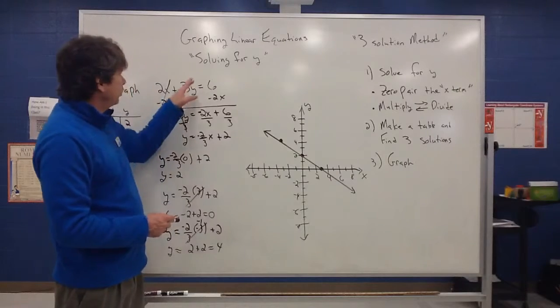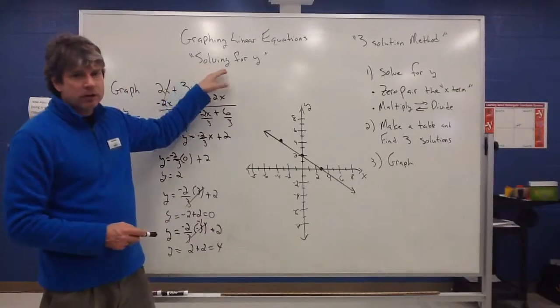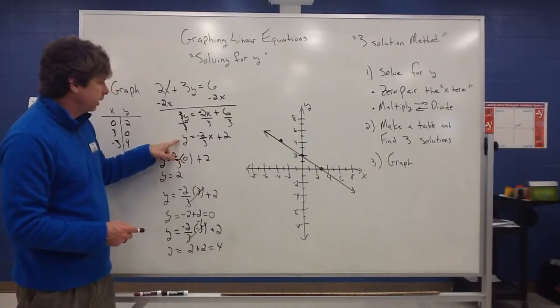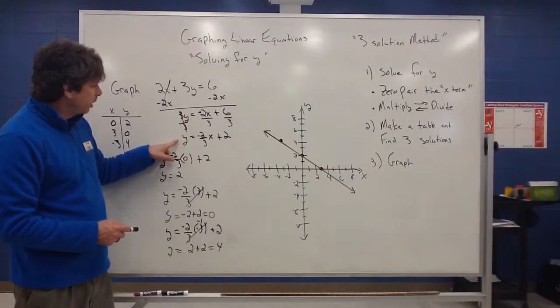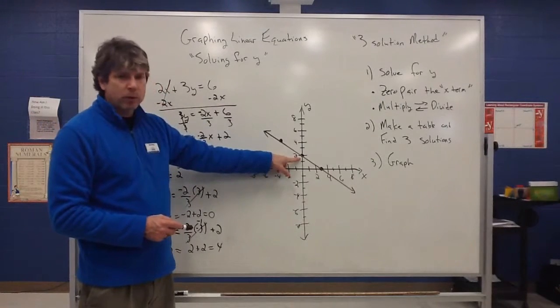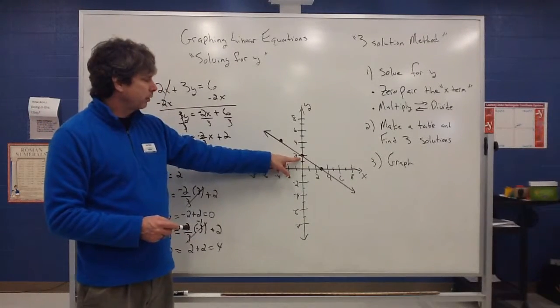So again, we did a little bit different strategy this time. We actually solved for y by getting y by itself and creating this equation right here. Something to pick up on is, notice this little two here. That two represents a special point. That's where it's going to cross the y-axis.